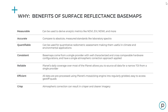They're consistent — basemaps come from a single provider with well-characterized and cross-comparable hardware configurations and have a single atmospheric correction approach applied. They're reliable — Planet's daily coverage over most of the planet allows you to source all data for a narrow TOI from a single provider. They're efficient — all data are pre-processed using Planet's mosaicing engine into regularly gridded, easy-to-access GeoTIFF quads. And finally, they're crisp — atmospheric correction can result in crisper and cleaner imagery.